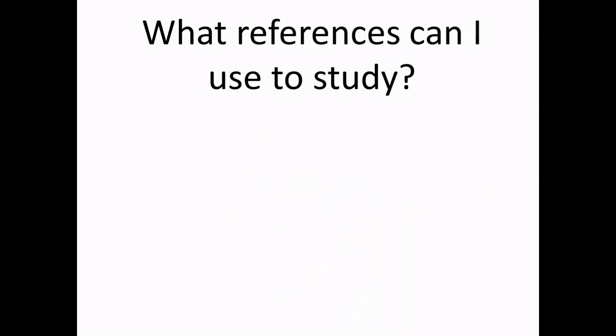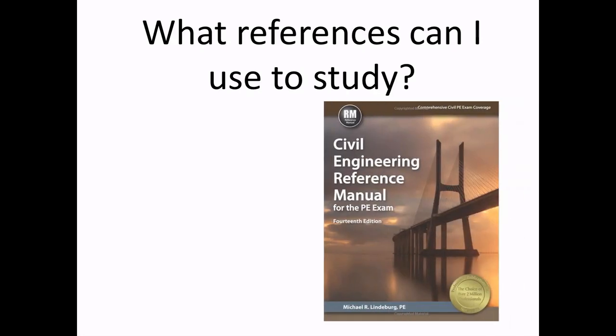And so what references can you use to study? The references you can use are first, the Civil Engineering Reference Manual by Lindbergh. This is also a manual you will use for the PE exam and it covers pretty much all the important topics of a civil engineer undergraduate career. It's almost like having a bachelor's degree in civil engineering in a book. It's that awesome and comprehensive. So you'll definitely want to score yourself a copy of that or find an electronic one online when you're doing your studying.